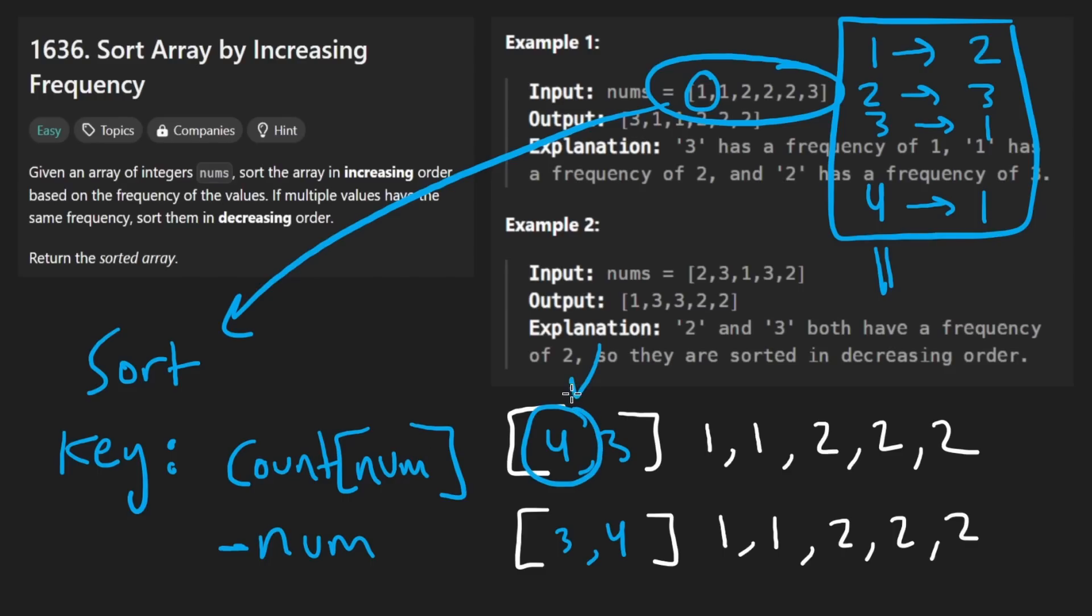For example, the sort key for four would be first, the count of four, which is one. And then next, it would be the negative of it, which is negative four. The sort key of three would be one, and then the second sort key would be negative three. So first, it's going to look here, these two numbers have the same frequency, there's a tie. So now look at the second key, which is the negative of each number. By default, it's going to sort them in ascending order. So it's going to put negative four first, and then put negative three, because negative four is smaller than negative three. Therefore, four is going to be first, and then three is going to be second.